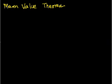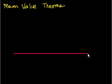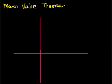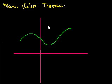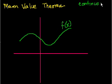So what does the mean value theorem say? Let me draw some axes — I'll do a visual explanation first. So that's my x-axis and this is my y-axis. And let's say I have some function f of x. This is some function f of x, and I'm going to put a few conditions on f of x — f of x has to be continuous and differentiable.